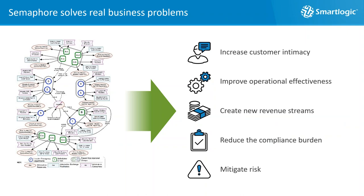How are large organizations using Semaphore? They use it to increase customer intimacy, improve operational effectiveness, create new revenue streams by monetizing information assets, and improve the quality and effectiveness of regulatory compliance activities by automating them with a very high degree of precision — which is less expensive and more exact than many manual processes.